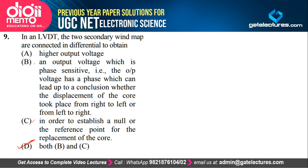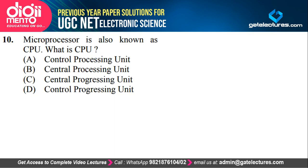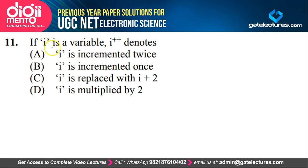Question 10: a microprocessor is also known as a CPU, which stands for Central Processing Unit — a straightforward definition question. The answer is option B. From C language: if I is a variable, then I++ denotes incrementing I by one. I++ means i = i + 1. This is the post-increment operator used in C. The correct option is option B.